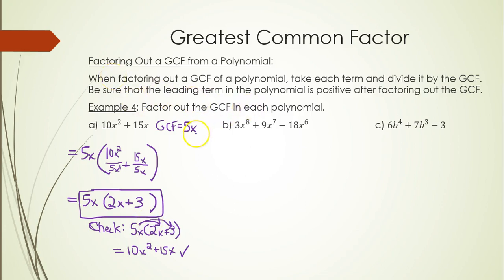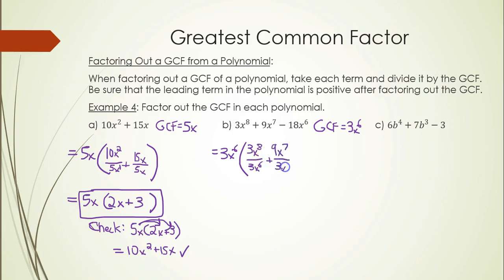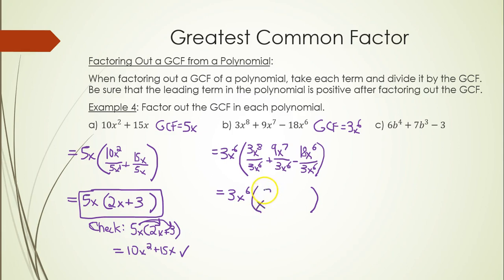In part b, the GCF is 3x⁶. We write 3x⁶ out front and divide every term by 3x⁶. Simplifying inside the parentheses: 3/3 cancels, x⁸/x⁶ = x², giving x²; 9/3 = 3 and x⁷/x⁶ = x, giving +3x; and 18/3 = 6 with x⁶/x⁶ cancelling, giving −6. The final answer is 3x⁶(x² + 3x − 6).